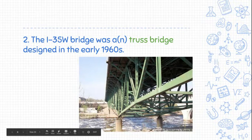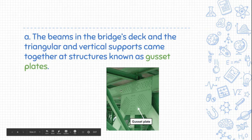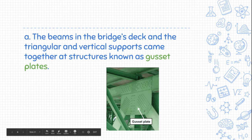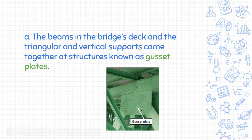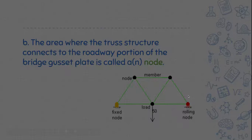There are some supports in the water, but the actual problem was in the trusses themselves. The beams in the bridge's deck and the triangular and vertical supports all come together in structures called gusset plates. These are big steel plates with bolts — they hold all the bridge together. All the beams and support structures are held by these gusset plates. They're like the connecting pieces that everything else connects to, and they're really important.